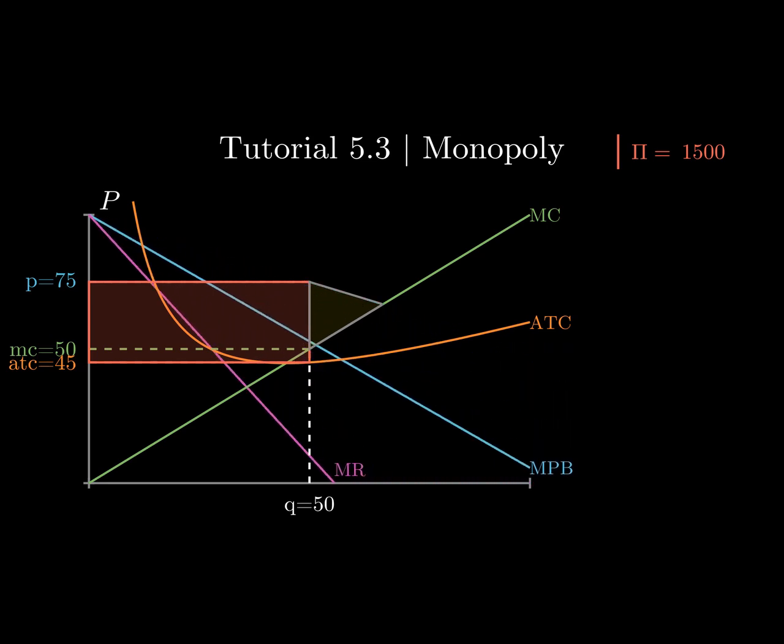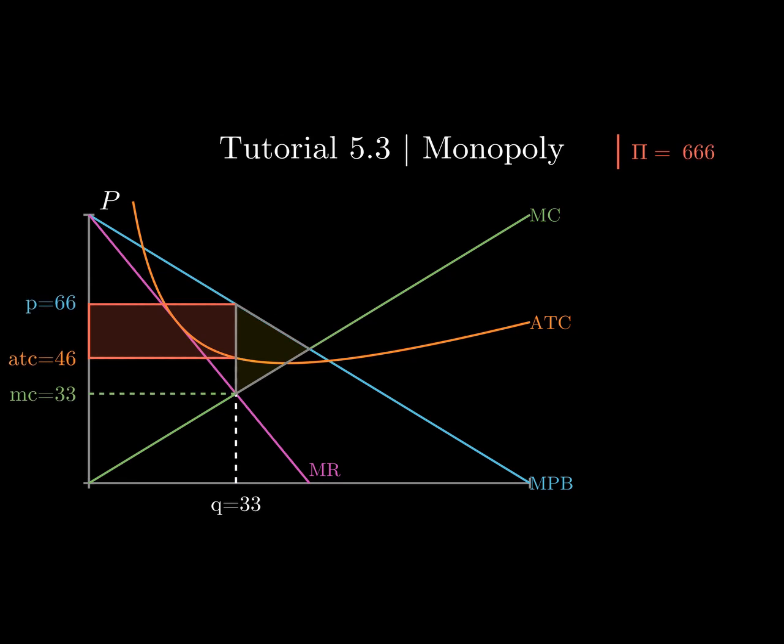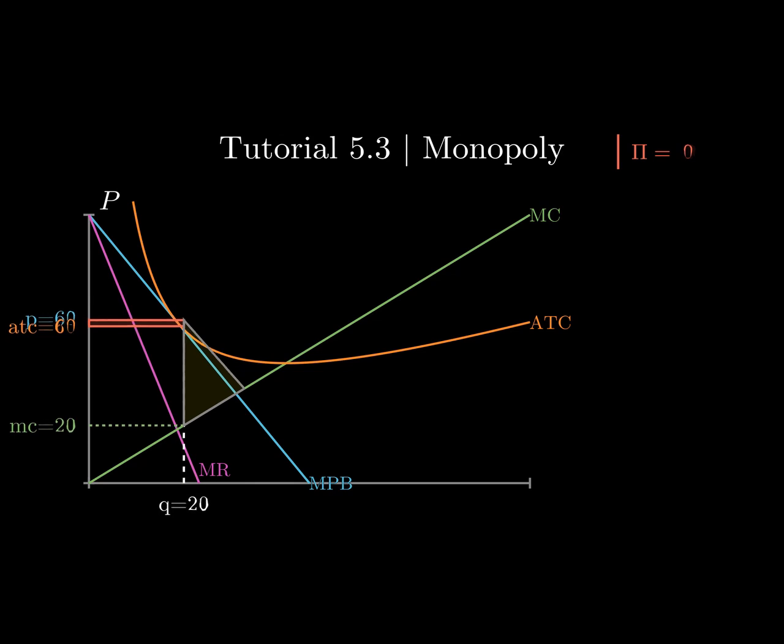When preferences in the market change, the solution to the firm's optimization problem also changes. When the demand curve shifts in, the firm's quantity also shifts in. And as you would expect, the profit also goes down. And the gray triangle in this model is deadweight loss, which is associated with the quantity that's not provided in the market, where marginal private benefit exceeds marginal cost.